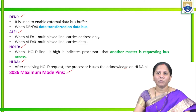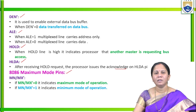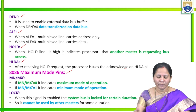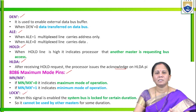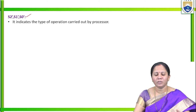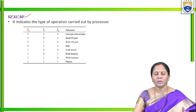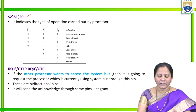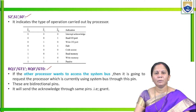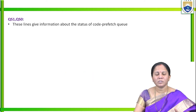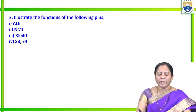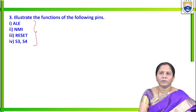Maximum mode pins: MN/MX̄ determines minimum or maximum mode. LOCK̄: when enabled, system bus cannot be released to any requested masters. S0, S1, S2 are three status signals indicating type of operation — reading, writing, memory or IO. RQ̄/GT̄ signals are used to request and grant system bus access. QS0 and QS1 indicate the status of the instruction queue.